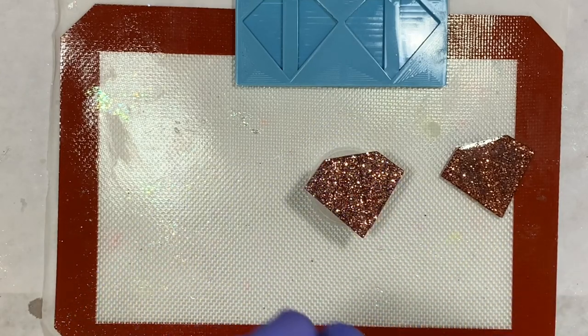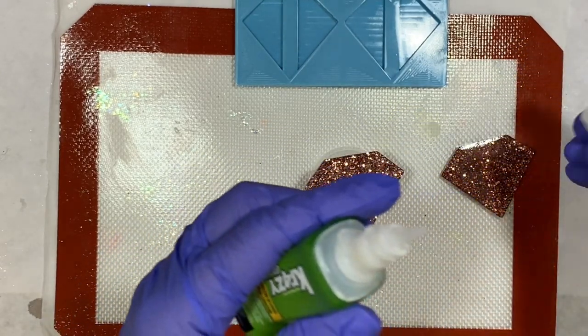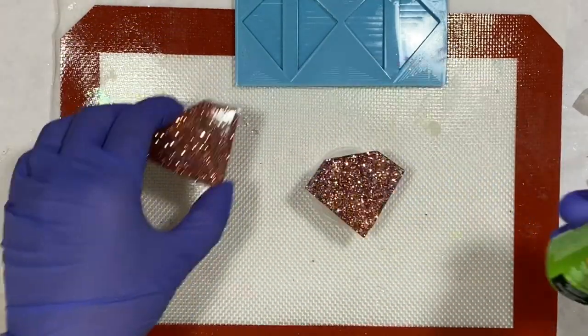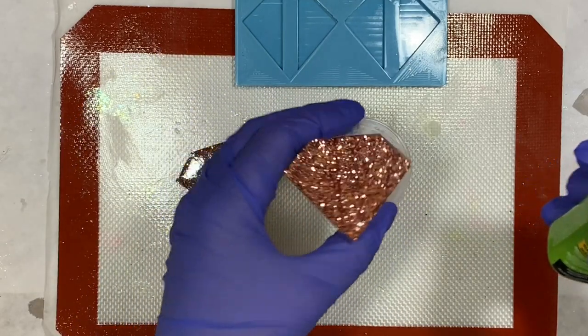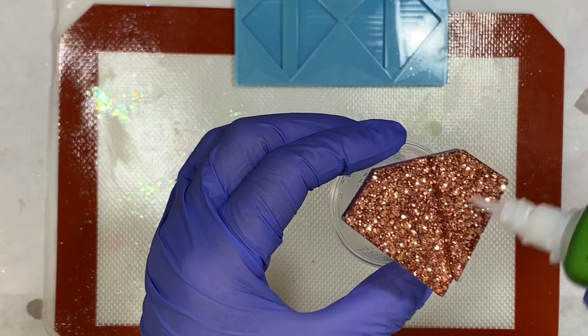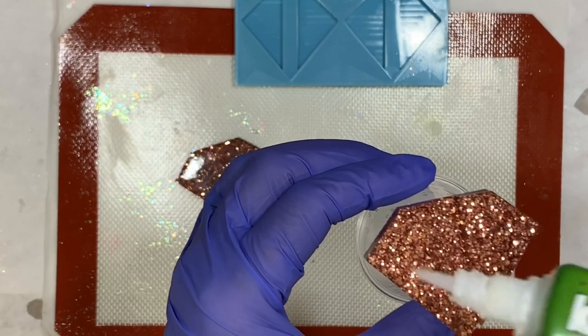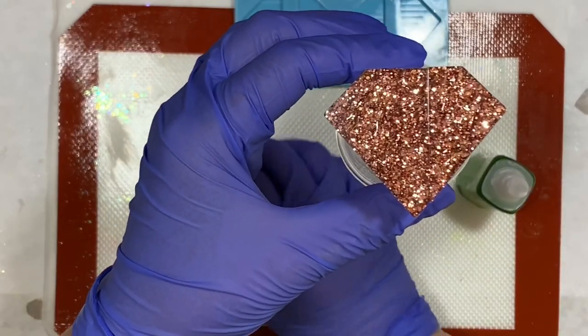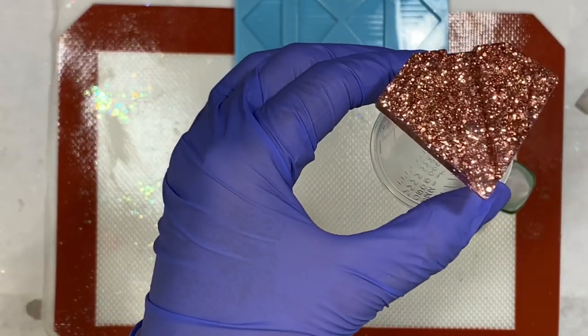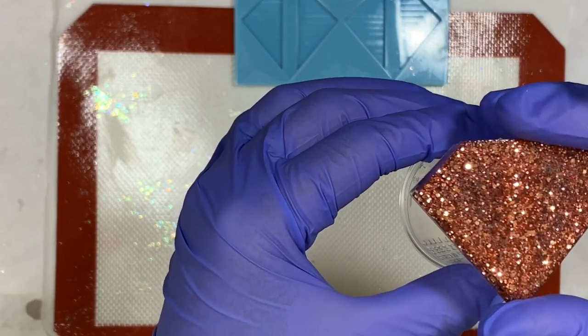Then what I'm going to do is take some super glue. Now if you have some other type of permanent adhesive that you like to use, by all means use it. Super glue I like for stuff like this because it's fast, it's easy. I'm actually going to put a top coat on it to kind of seal it all together anyways. I'm just going to put a little glue - you don't want to go too heavy because then it will seep off the edges and cause a sticky super glue mess.